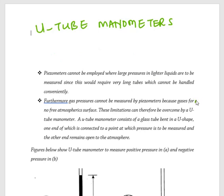Furthermore, gas pressures cannot be measured by piezometers because gases form no free atmospheric surface. Therefore, for these limitations we can employ a U-tube manometer comfortably to measure large pressures in lighter liquids and to overcome the limitation of no free atmospheric surface. A U-tube manometer consists of a glass tube bent in a U-shape, one end of which is connected to the point at which pressure is to be measured, and the other end remains open to the atmosphere.